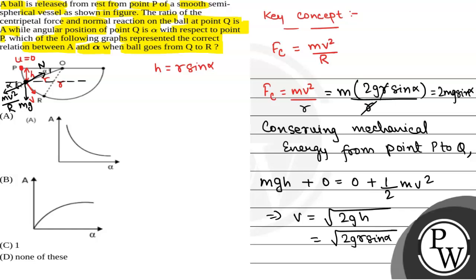This angle will be 90 minus alpha. Component of mg towards this normal will be mg sine alpha. If we balance force at this point Q along this normal, we will have normal is equal to mv squared by R plus mg sine alpha and mv squared by R is 2mg sine alpha as we have calculated here plus mg sine alpha. Normal will be equal to 3mg sine alpha.